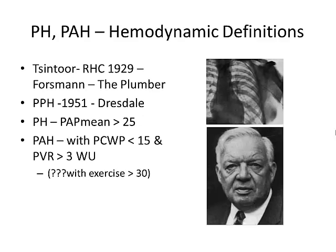The first right heart catheterization was performed by Forstmann — who was a plumber, but he did not become a cardiology plumber; he became a urologic plumber because he was disciplined for his work. The term primary pulmonary hypertension was described in 1951. Our current definition of pulmonary hypertension by right heart catheterization is a mean PA pressure of 25. For pulmonary arterial hypertension, you also need a wedge of less than 15 and a PVR of greater than 3 wood units.